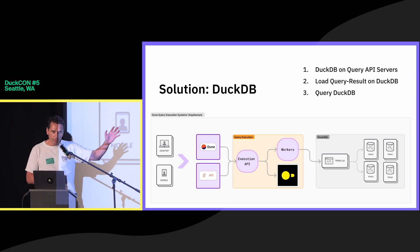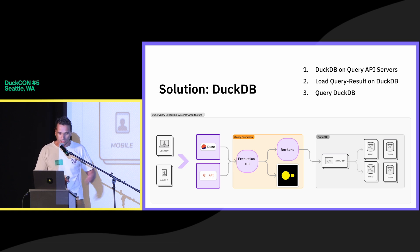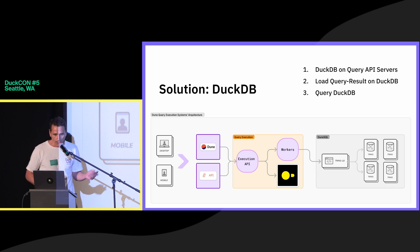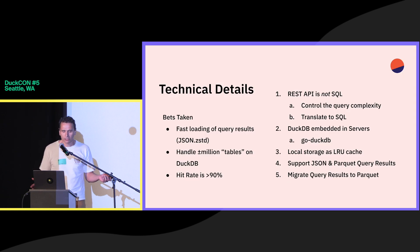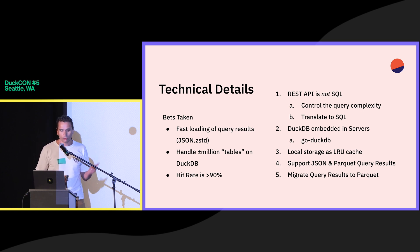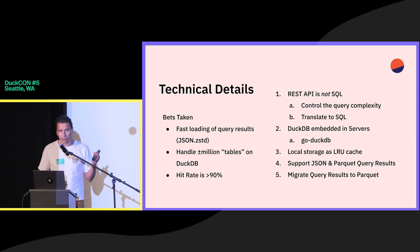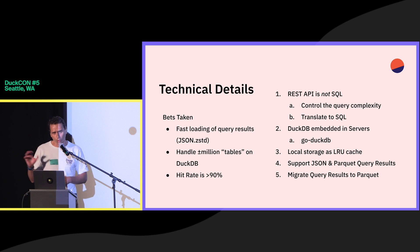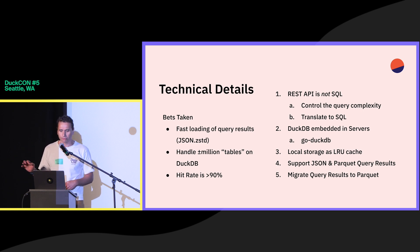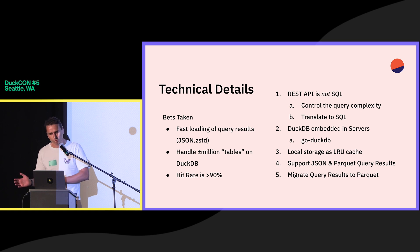We skip the complete beast of the query engine that has tens of thousands of CPUs, and we simply run it embedded on our API servers, which are like two or three. For the technical details: we needed to load the data fast, handle approximately a million tables on DuckDB — every single query result is a table — and we had to have a high hit rate to reuse results. For high performance, we control the queries being run on DuckDB, and we translate our own API to DuckDB SQL. We run this in Go with go-duckdb.